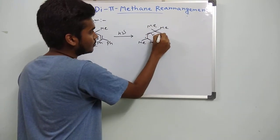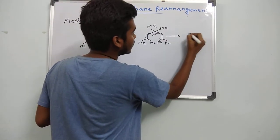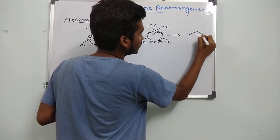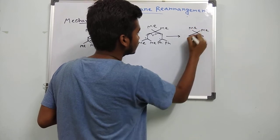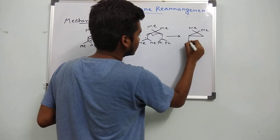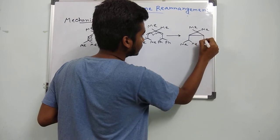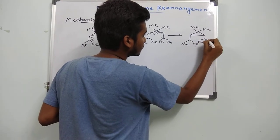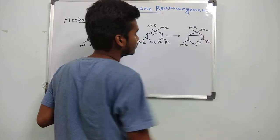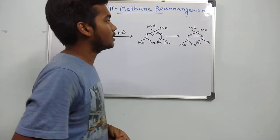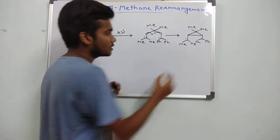Then these two radicals will combine to each other, and we will get this type of intermediate system. It is not really an intermediate — we can say that this is just like a transition state.